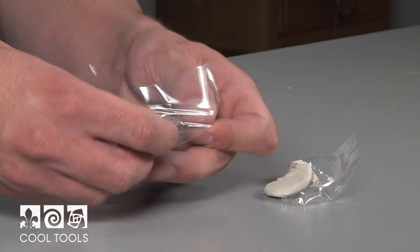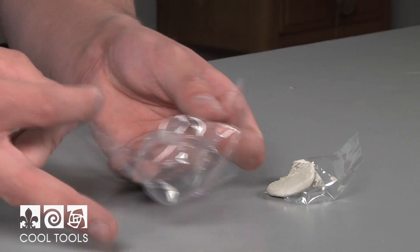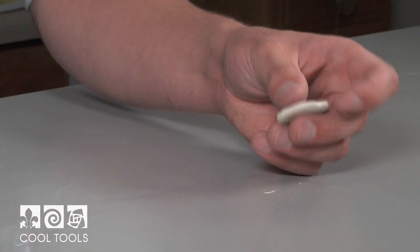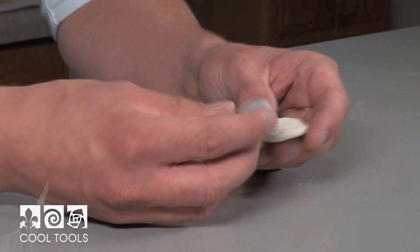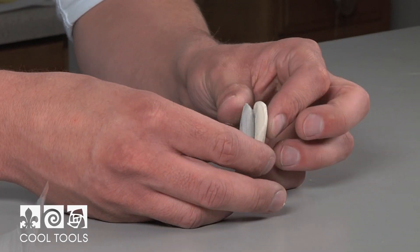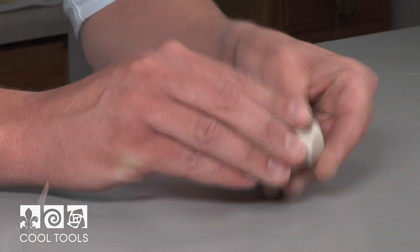The main goal is to make sure the two clays are mixed thoroughly without any marbling. The PMC III is beige and the PMC Sterling is gray, so as you mix, you will end up with a light gray uniform color.